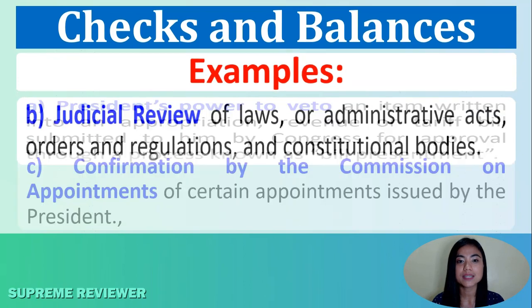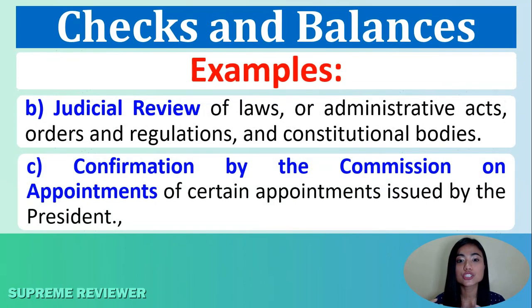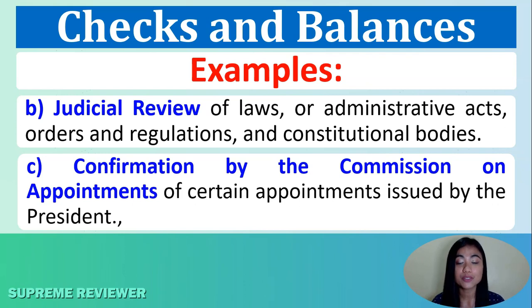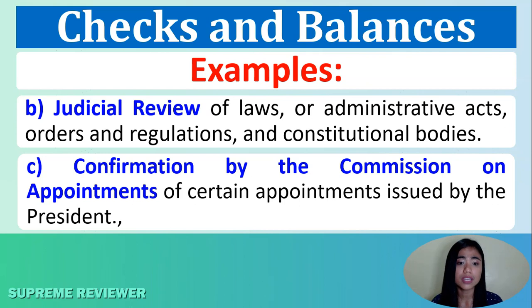Another example of checks and balances is judicial review — judicial review of laws or administrative facts, orders and regulations, and constitutional bodies.